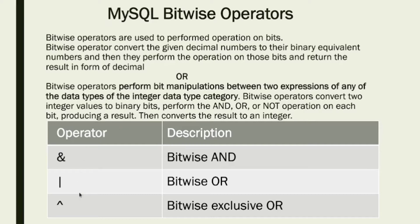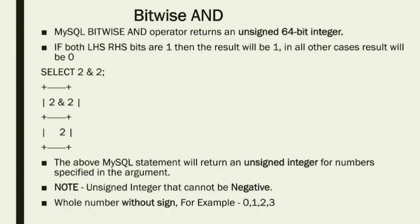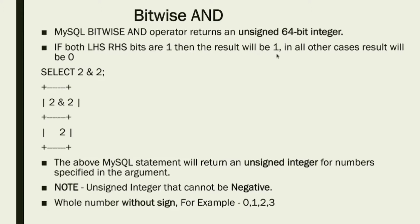The operators we will cover are: bitwise AND, bitwise OR, and bitwise exclusive OR. Now let's look at the bitwise AND operator. It returns an unsigned 64-bit integer. An unsigned integer is a non-negative whole number — for example, 0, 1, 2, 3, 4. For the AND operator: if both the left-hand side and right-hand side bits are 1, then the result will be 1; in all other cases the result will be 0.